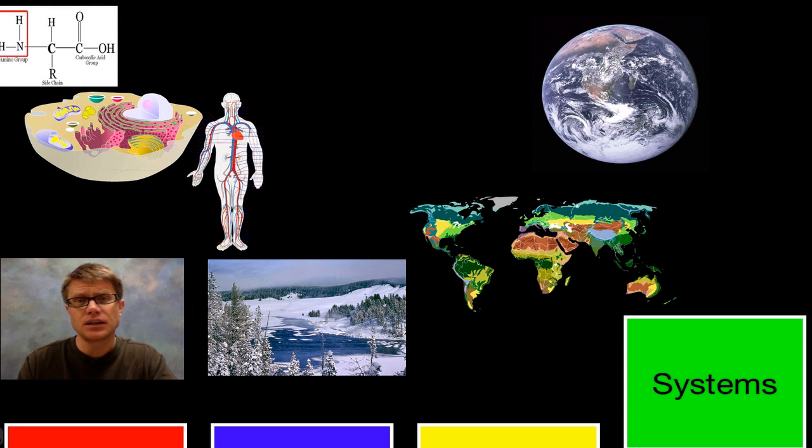And then the final one is the idea of systems. In other words in biology we're built on this hierarchy of life. And what that means is that basically living things are made up of carbon compounds. Those are organized into macromolecules which make organelles, which make cells, which make tissues, which make organs, which make organ systems, which make organisms, which make populations, which make communities and ecosystems and biomes and biosphere. So there's this hierarchy of life.